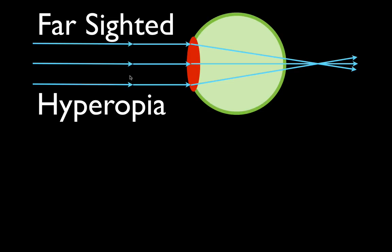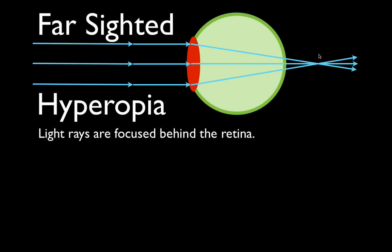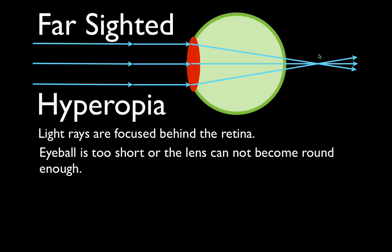Another term for farsighted is hyperopia. Most people know the prefix hyper means too much — like hyperactive means too much energy. Hyperopia still means too far. Light rays are focused behind the retina, and another way to think about it is that the eyeball is too short, or the lens cannot become round enough.